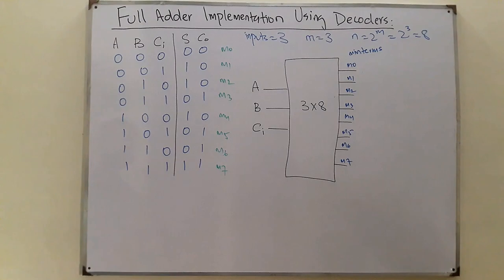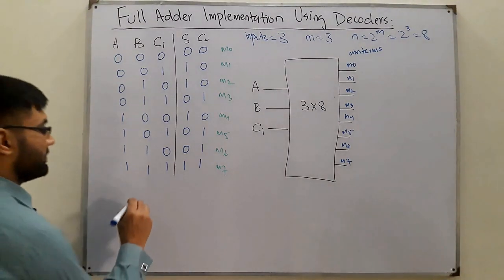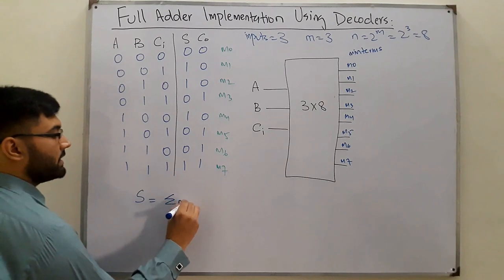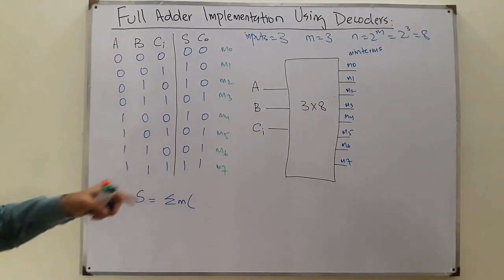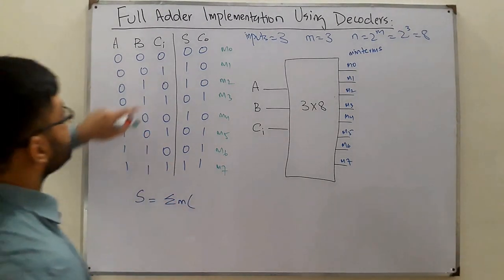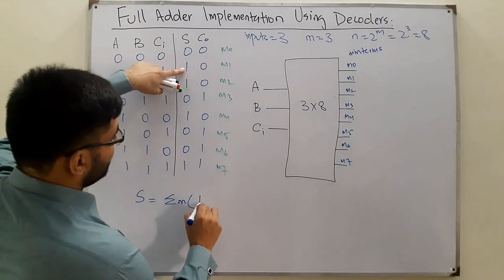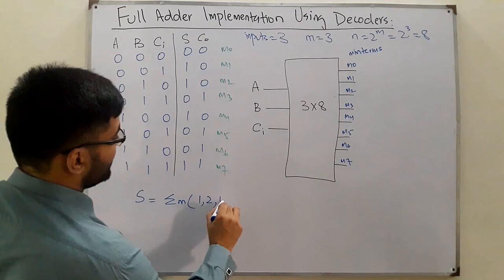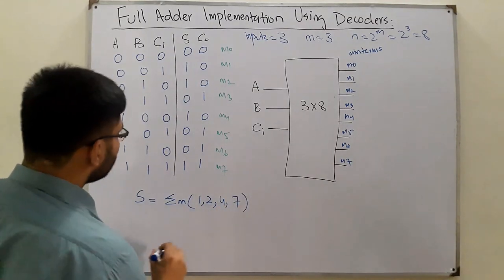Now you have a look for which minterm for the sum. You have the summation of minterms—we check for that which are high. So this is m1, we have m2, and then you have m4 and m7: 1, 2, 4, and 7.